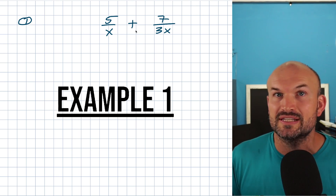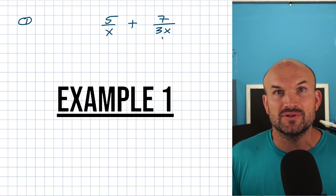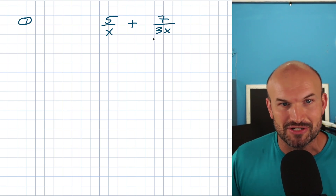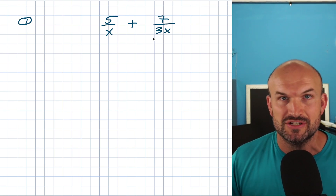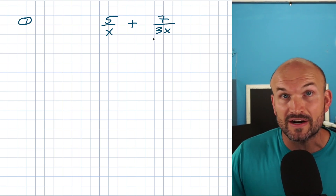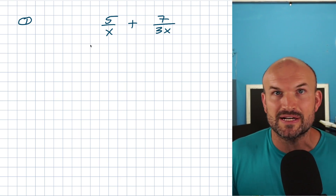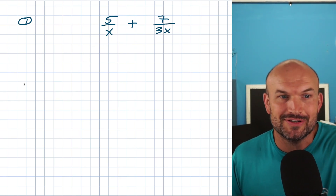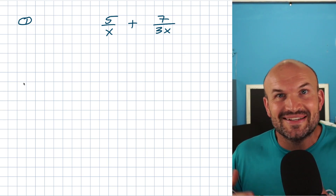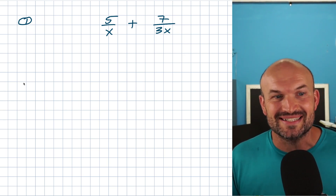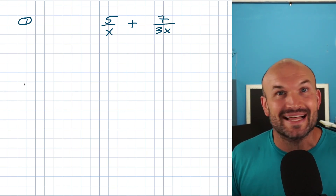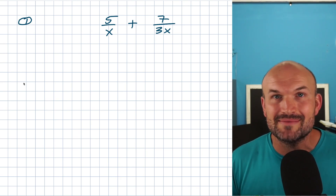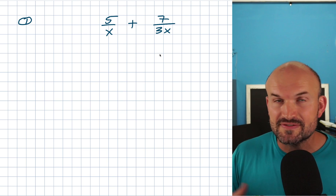Let's go and take a look at this first example. You can see that we have variables in the denominator — that's the idea of combining rational expressions. I'm using the word rational expressions because we have variables here. But if you think about it, rational expressions are really just fractions, and that's usually why students don't like them because they don't like fractions. They usually take a little bit more time and can just be confusing to work with.